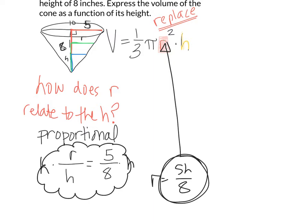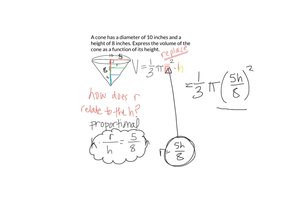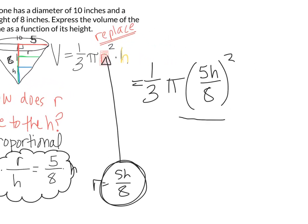Which makes our equation become one-third pi. Now 5h over 8 is the new radius squared, times the normal height.